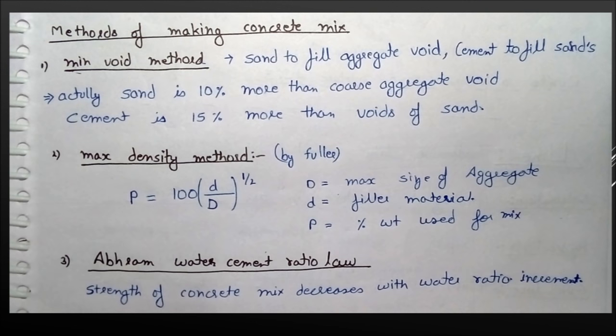Number two is the maximum density method. This was given by Fuller, where the percentage of weight of particles should be equal to 100 times small d upon capital D raised to the power 1 by 2, where D is maximum size of aggregate and small d is the filler material.